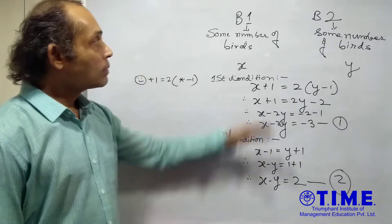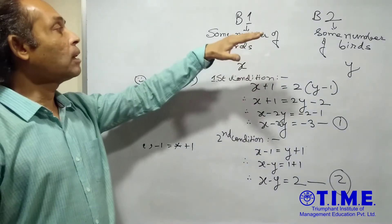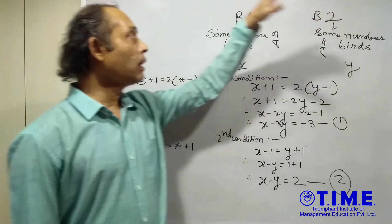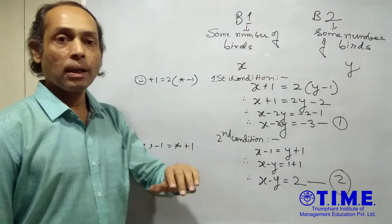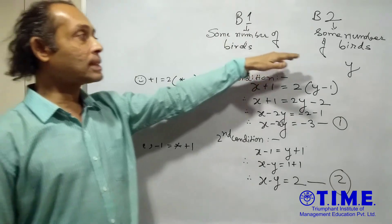Now, the birds on branch B1 say that if one of you flies and comes over here, so will become twice your number. Now, what we do is, how do we solve this type of an equation?